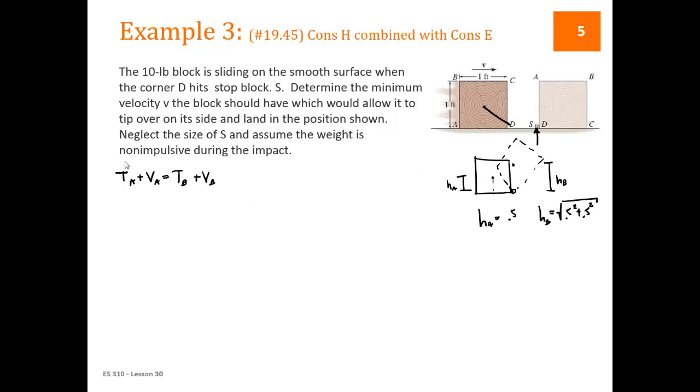So in doing that, then the center of mass changes from HA to HB. And we can write each of those H's. HA is just half of the way up the box, which is 0.5. So HB is simply the diagonal of this box, which is equal to the square root of 0.5 squared plus 0.5 squared. So those are our two H's.